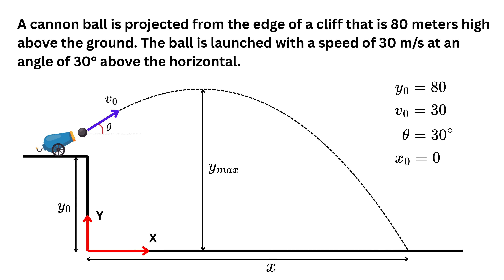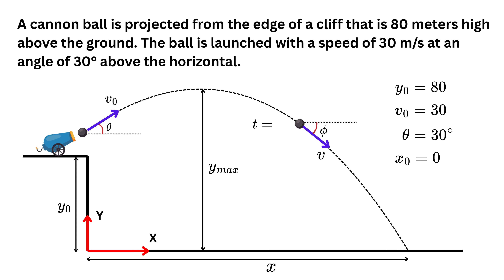We also need to find the velocity of the projectile at 3 seconds after launch. The projectile will be somewhere along the trajectory at that point. The instantaneous velocity vector at that point has magnitude v and makes an angle phi with the horizontal, and we need to find these values at t equals 3 seconds.